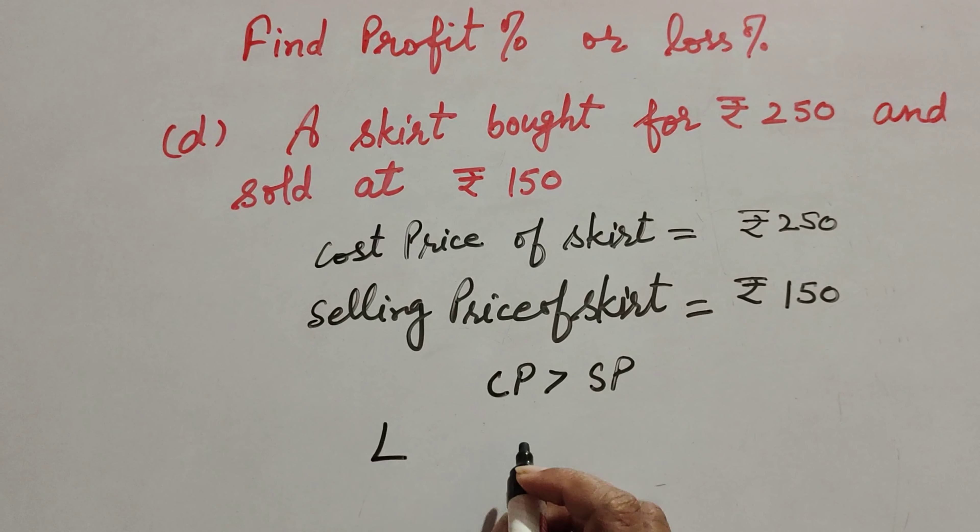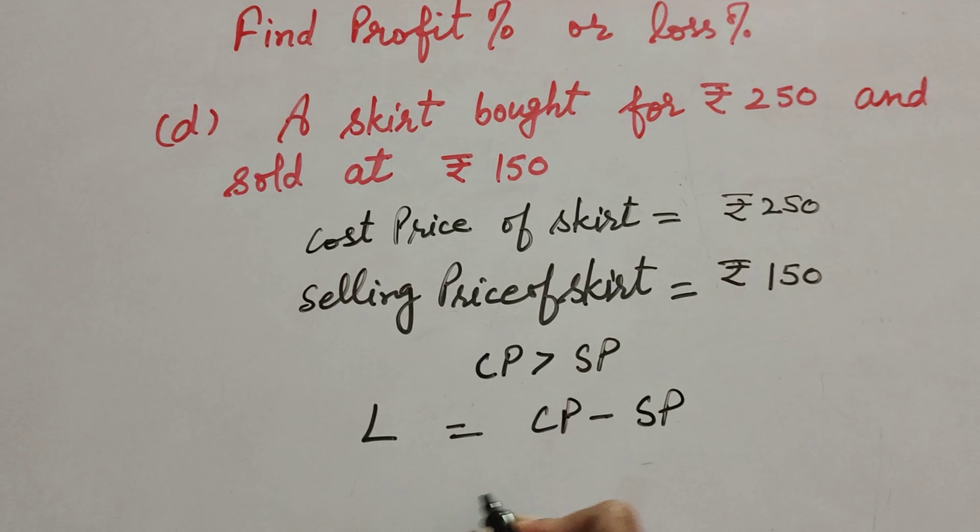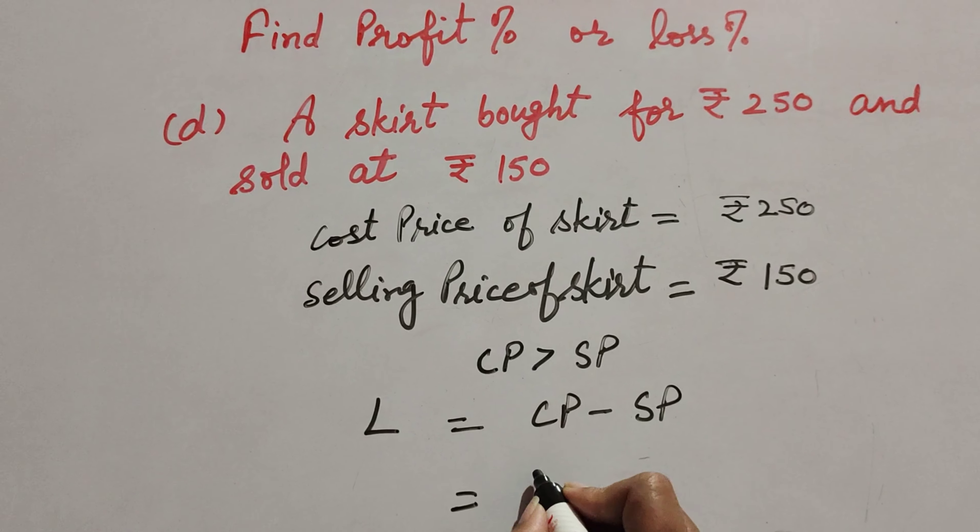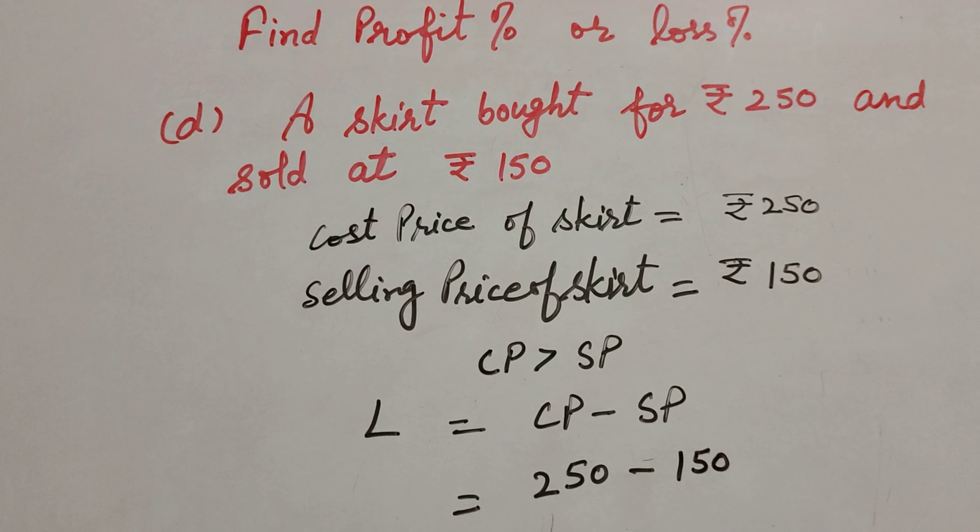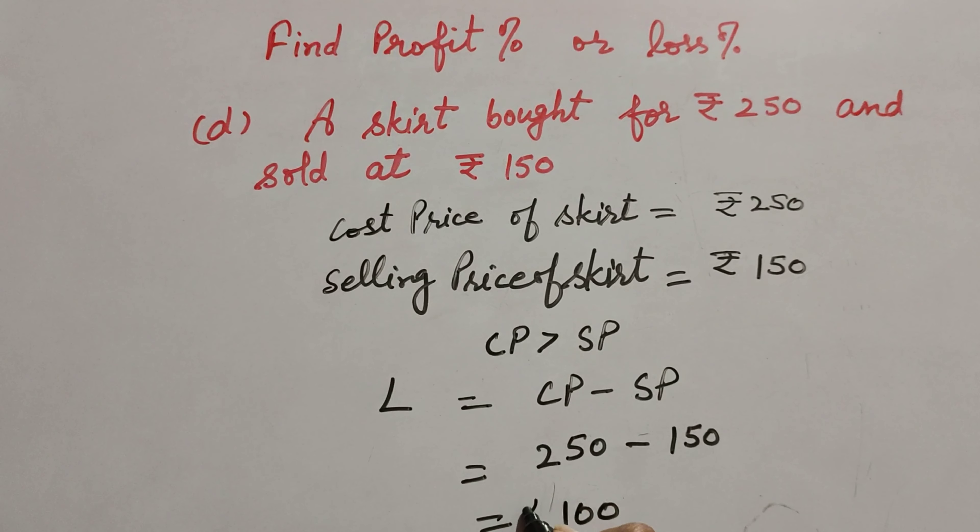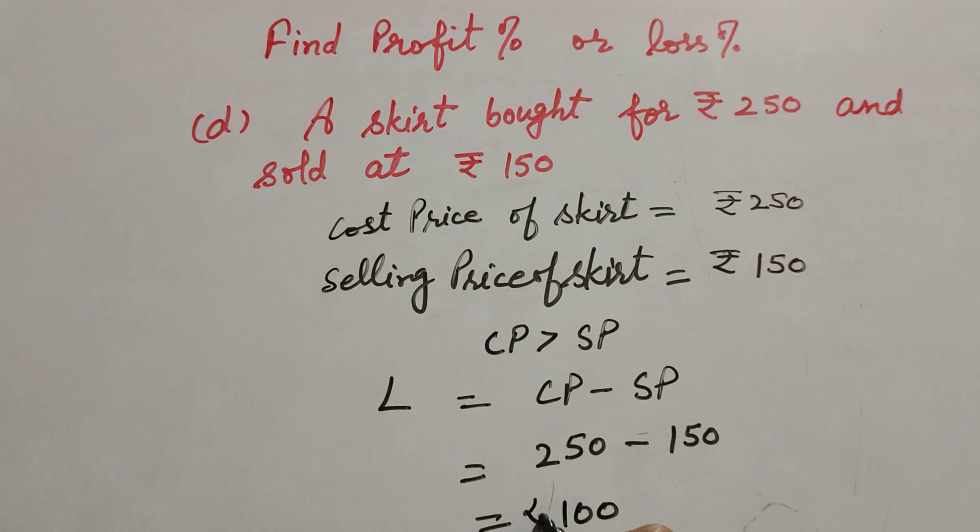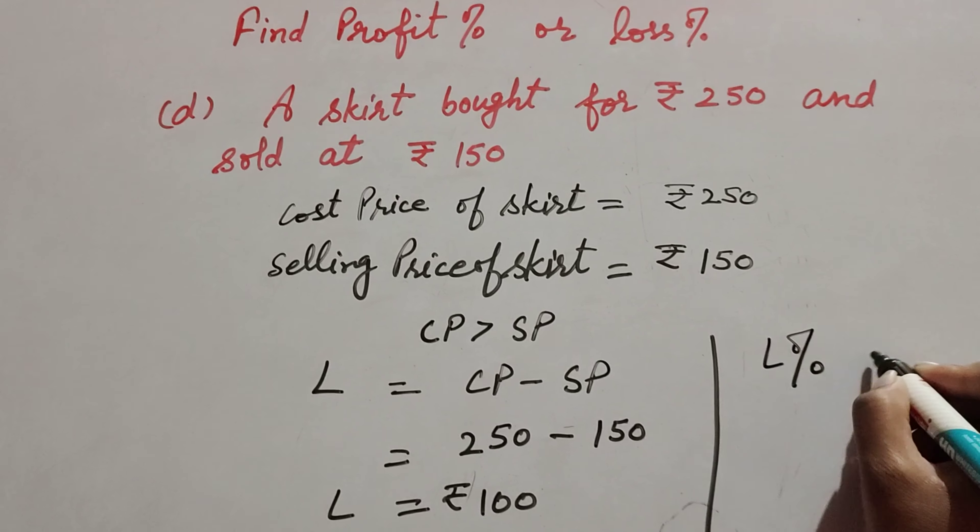Loss is equal to cost price minus selling price. Cost price is equal to 250 minus selling price which is 150. 250 minus 150, we get 100. So loss is rupees 100. Now we find loss percent.